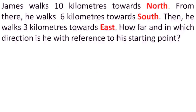This question is of Type 1, dealing with North, South, East, West directions. The question says: James walks 10 kilometers towards North. Suppose this was the starting point — he walks 10 kilometers towards North, then from there he walks 6 kilometers towards South, and then he walks 3 kilometers towards East.